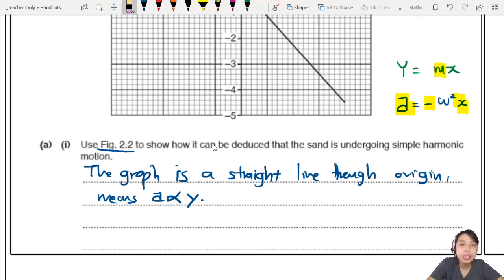You want to mention that acceleration is proportional to displacement. How do we know it's proportional? You need to describe. Don't just say acceleration is proportional to displacement. That is defining simple harmonic motion. But we want to show, based on the graph, use figure 2.2.